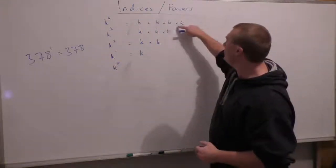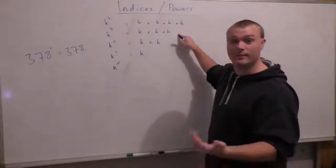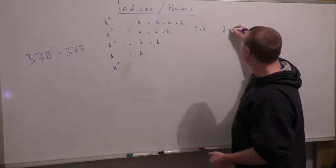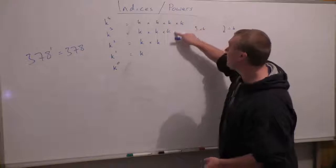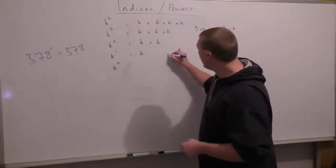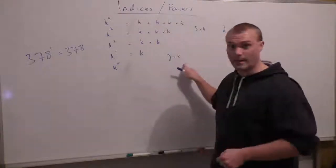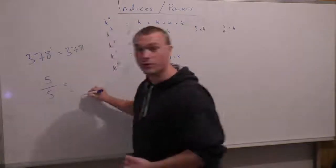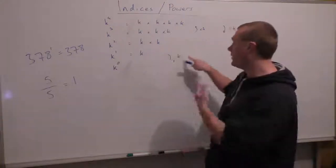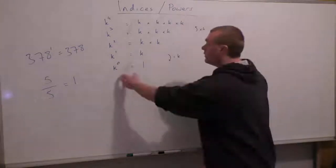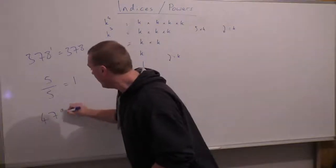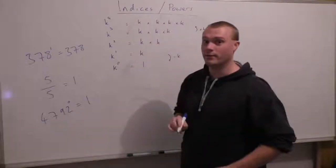To go down a line, instead of multiplying by K we're dividing by K, because the opposite of multiplying is dividing. Dividing by K to go down each line means that to get from K to the power 1 down to K to the power 0, we divide K by K. Anything divided by itself is just 1 — if you've got 5 things divided between 5 people, each gets 1. So K divided by K is 1, meaning K to the power 0 is 1. Any number to the power of 0 is 1, so 4792 to the power of 0 is always 1.